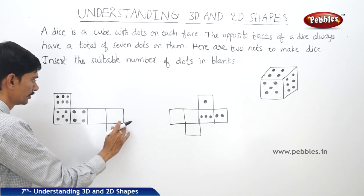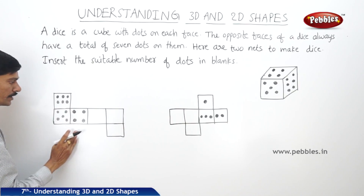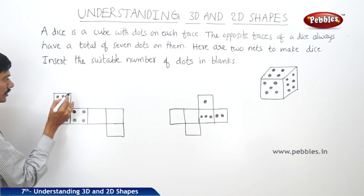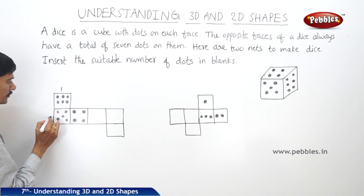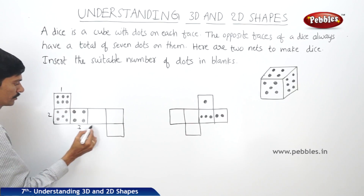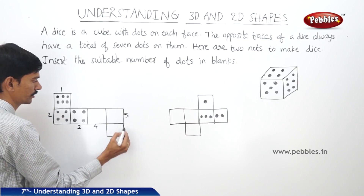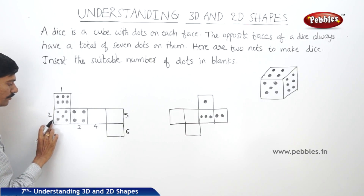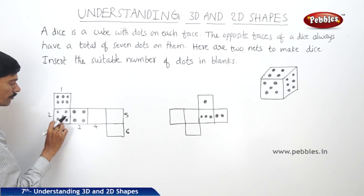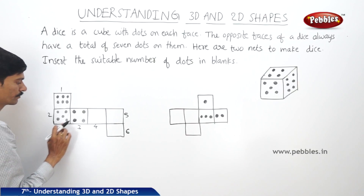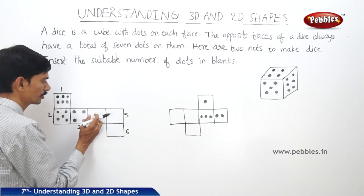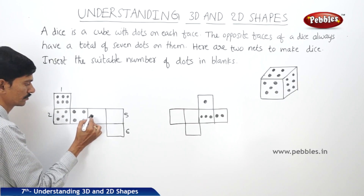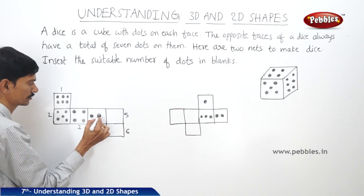Now if you take the net figure of any dice, let us give the numbers to each face: one, two, three, four, five, six. Now as face two has five dots on it, then its opposite face four will have two dots, because five plus two is seven.